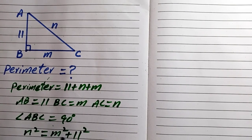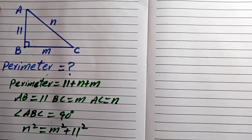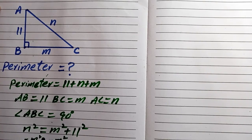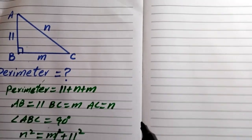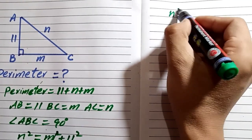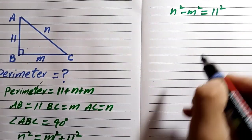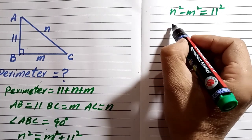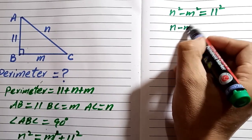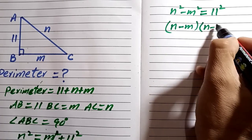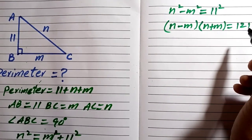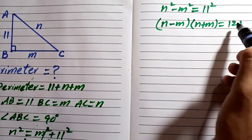We rearrange by subtracting m squared from both sides, so the m squared terms cancel, leaving n squared minus m squared equals 11 squared, which is 121. We then apply the difference of squares formula: a squared minus b squared equals (a plus b)(a minus b), giving us (n minus m)(n plus m) equals 121.